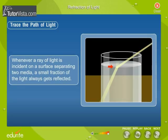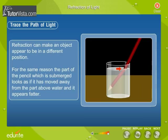Note that whenever a ray of light is incident on a surface separating two media, a small fraction of the light always gets reflected. Refraction can make an object appear to be in a different position. For the same reason, the part of the pencil which is submerged looks as if it has moved away from the part above water, and it appears fatter.